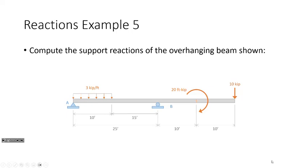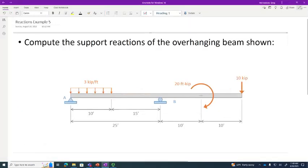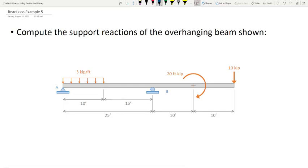We have an overhanging beam example. Other than the concentrated moment, there's nothing about this problem you shouldn't already be able to handle — we've dealt with overhanging beams, fixed supports, roller supports, concentrated loads, and distributed loads. The concentrated moment is pretty easy to deal with, and I just want to point that out.